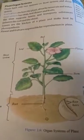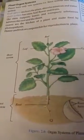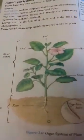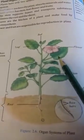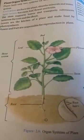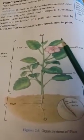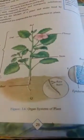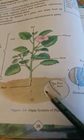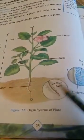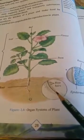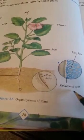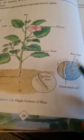The stem helps to move things from the root system to the shoot system. The leaves are the kitchen of the plant — they make food by photosynthesis. Flowers and fruits are responsible for the reproduction of the plant. The root has small hairs called root hairs, which help the root to absorb water and minerals from the soil.